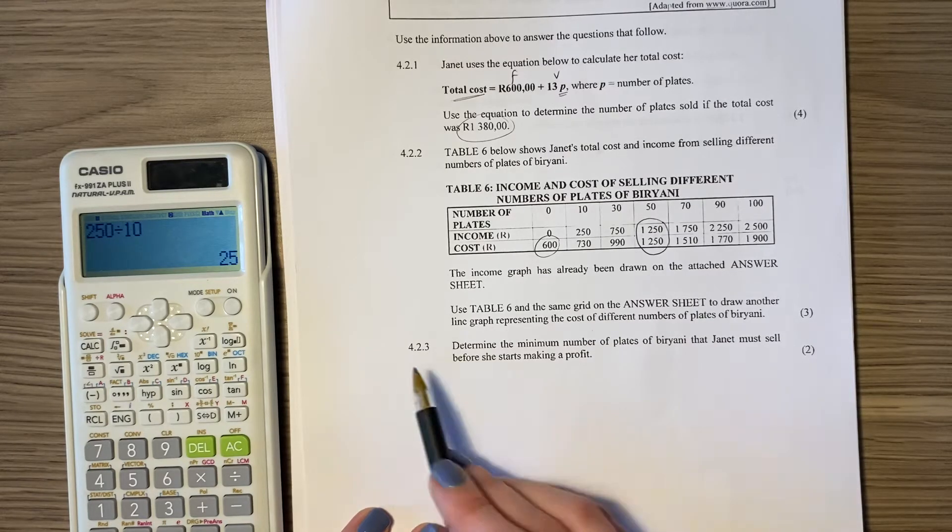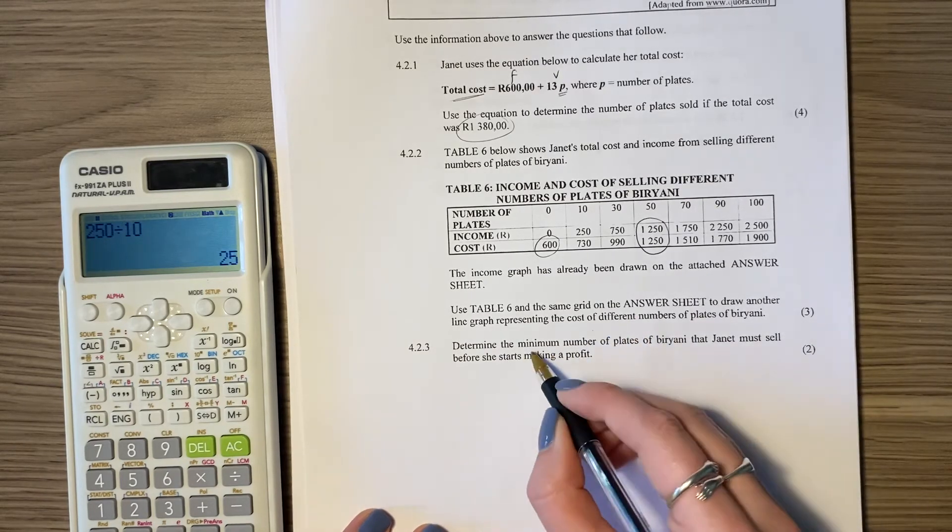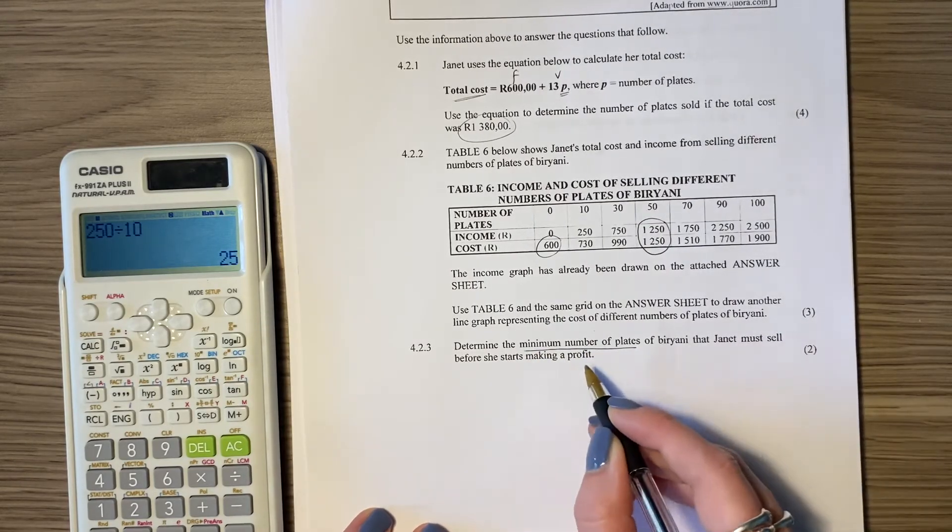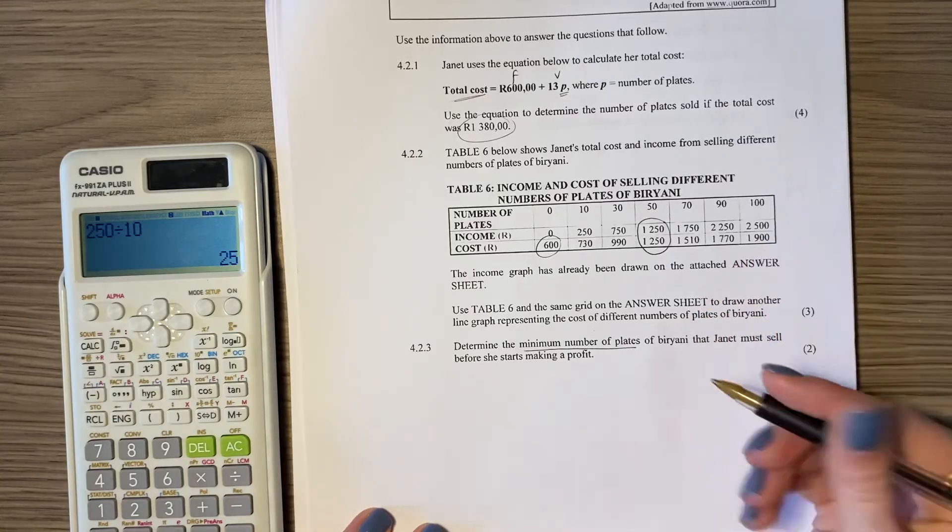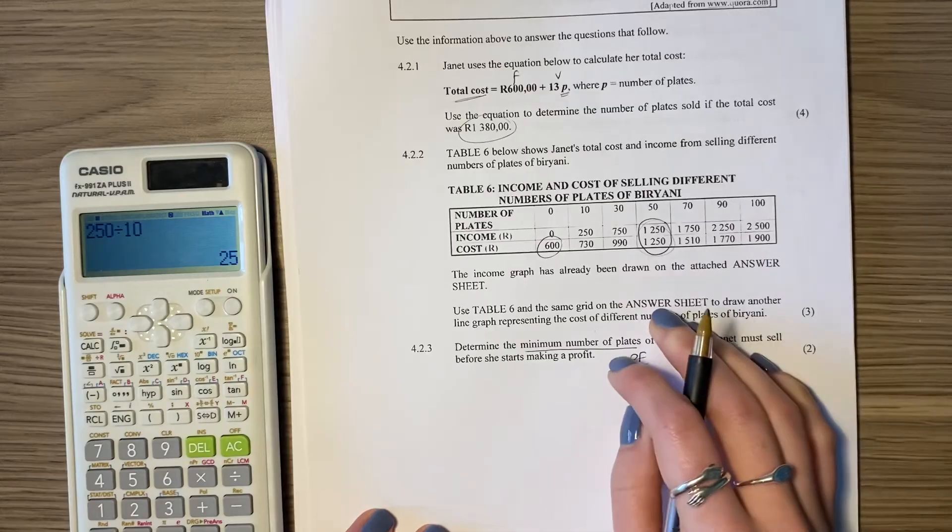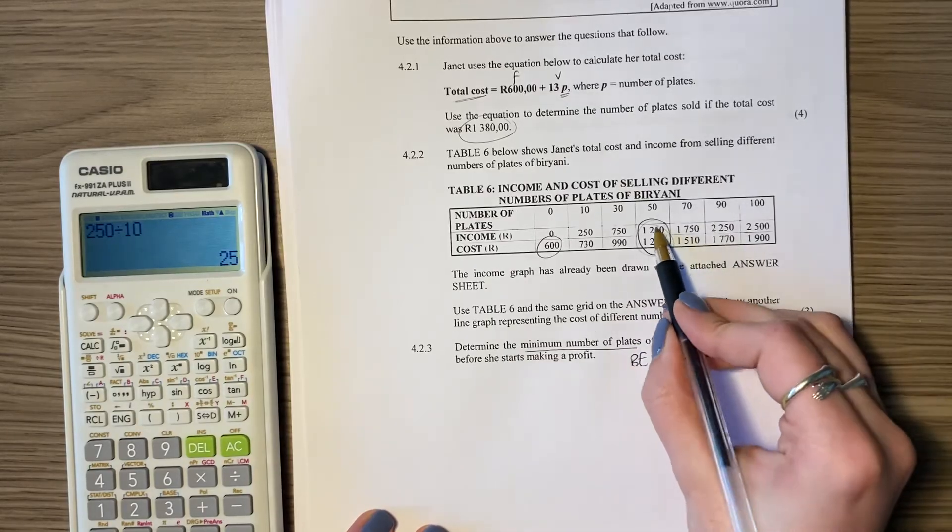Let's look at the last question for this video, 4.2.3. Determine the minimum number of plates of briyani that Janet must sell before she starts making a profit. So it's basically saying, what is my break-even point? What's my break-even point? 50, where income equals expenses.